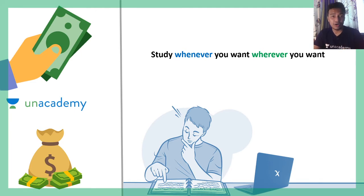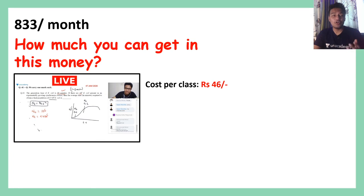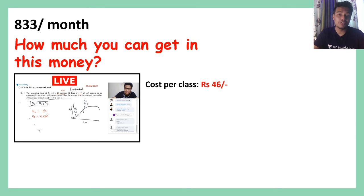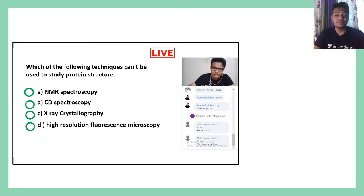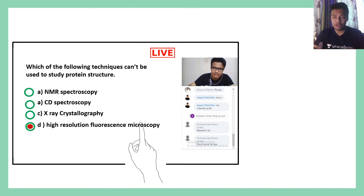With the academy, you can learn from wherever you want, whenever you want. These courses cost as little as 833 rupees per month if you take a subscription for one or two years, which means each class costs only 46 rupees. So if you're planning to kickstart your preparation, you can take my plus courses, and there would be plus courses by other educators as well. It would give you an exam-like feeling because you can participate in live quizzes, polls, and more.